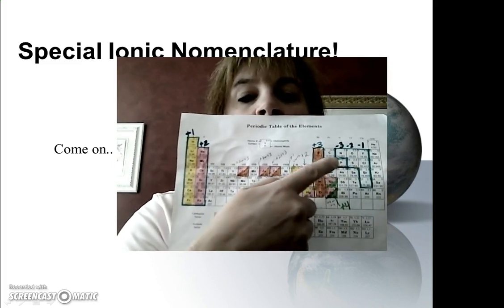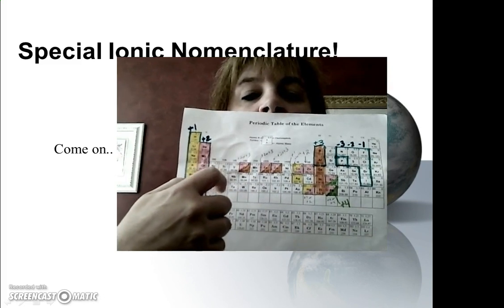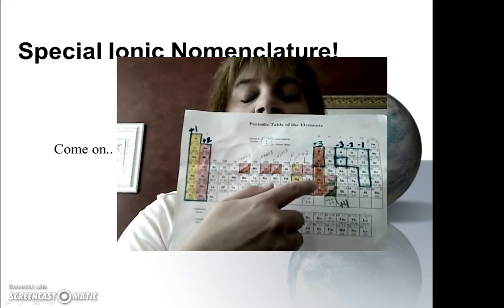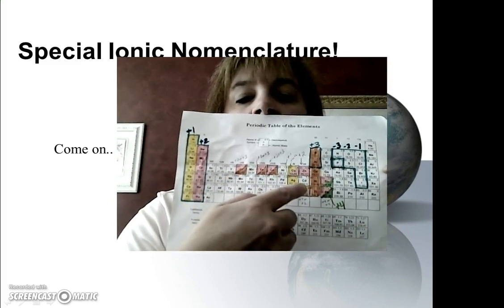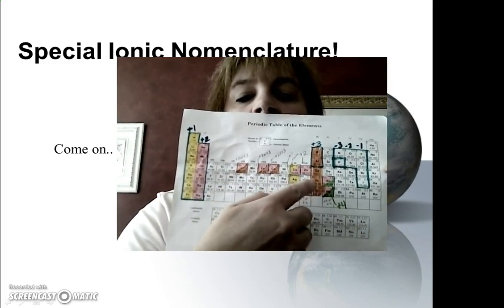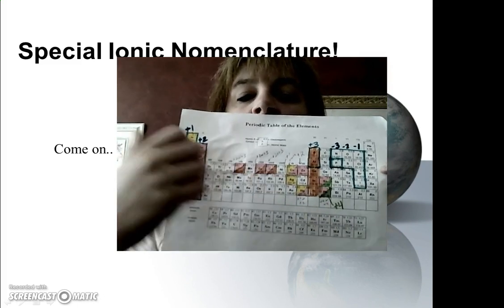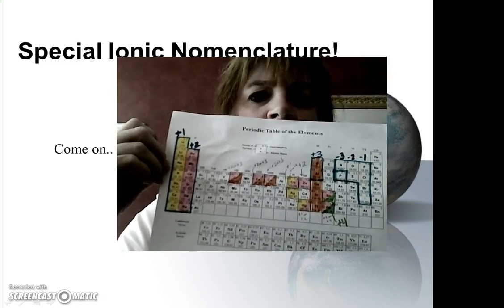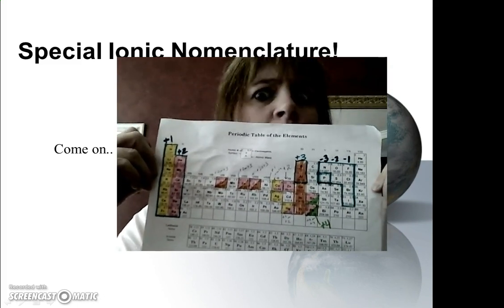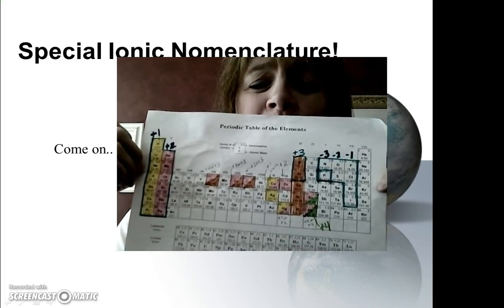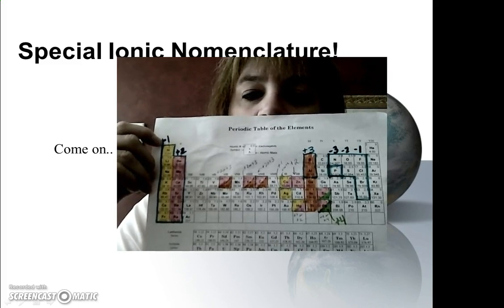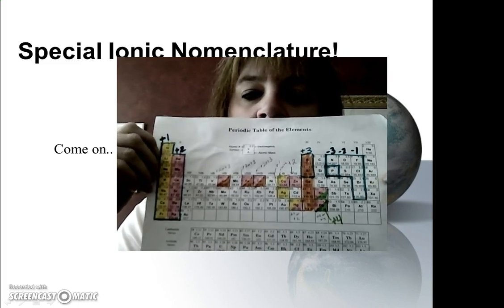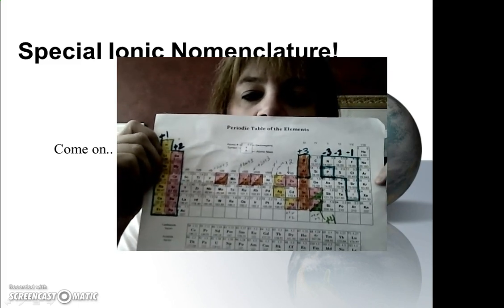Well, special ionic nomenclature are for those elements that are here in this D block. And some of these elements, and then tin and lead over here. But some of these have different charges. It's like they don't know, am I plus 1, am I plus 2, am I plus 3, or plus 4? Oh my gosh, I don't know. So what I've done is I've actually colored them, so you can see that there are certain elements in the transition metals that have different charges.